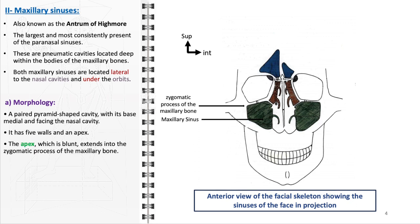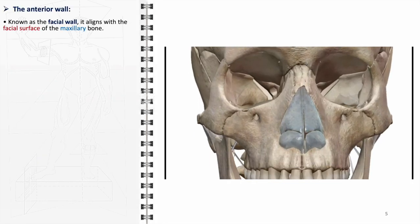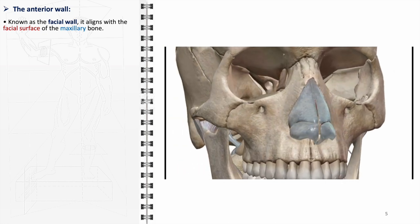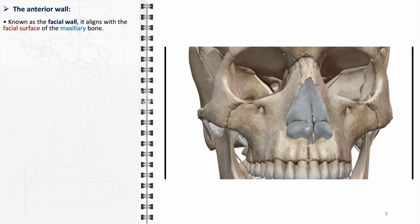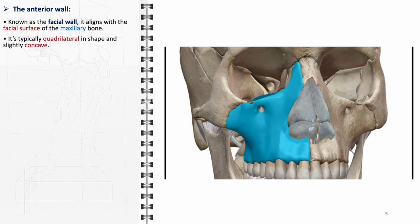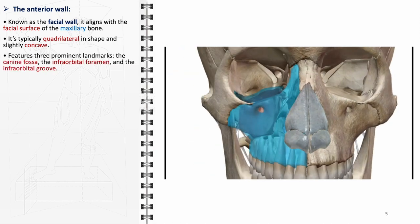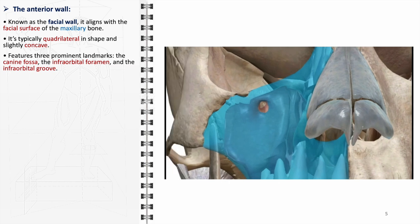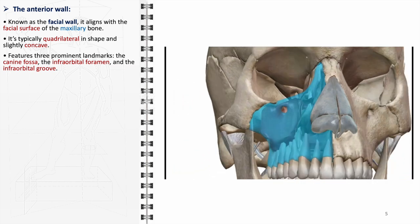The apex of each maxillary sinus, blunt in form, extends into the zygomatic process of the maxillary bone. The base of the maxillary sinus is formed by the inferior part of the lateral wall of the nasal cavity. The anterior wall, often referred to as the facial wall, aligns with the facial surface of the maxillary bone. This wall is characteristically quadrilateral in shape and exhibits a slight concavity, with implications for surgical interventions and trauma management. It is distinguished by three prominent landmarks: the canine fossa, the infraorbital foramen, and the infraorbital groove.